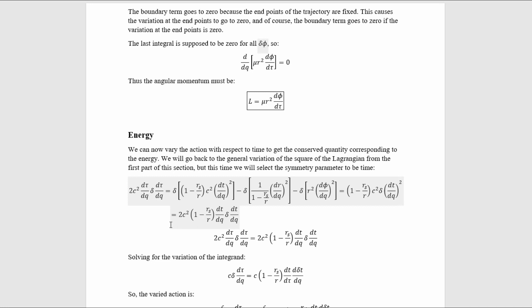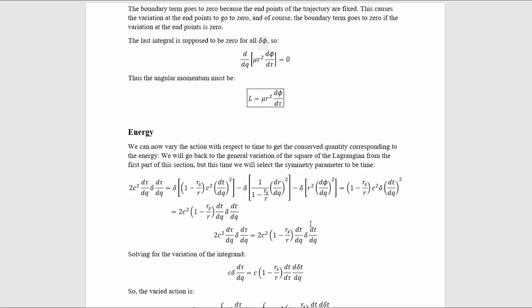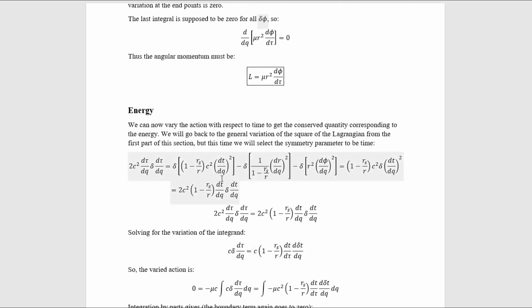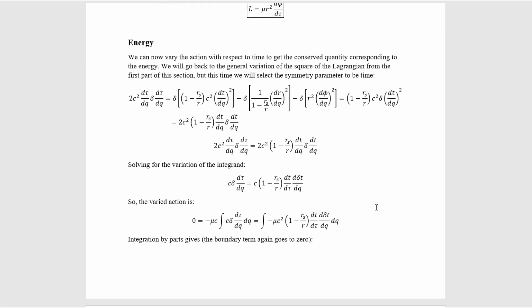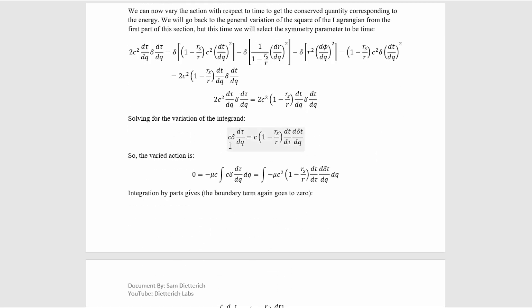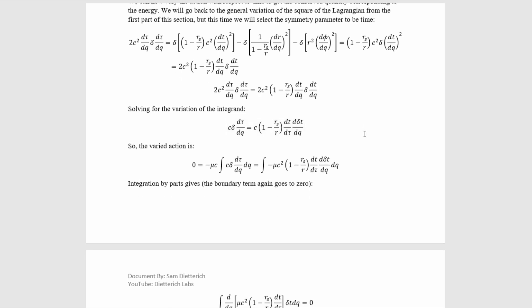So now let's switch it up and choose the symmetry parameter to be the time instead of the azimuthal angle, so that we get the energy formula instead of the angular momentum formula. The only term that's dependent on the time is this one here, so that's the only term that survives, and again we can use the power rule to get this. We ultimately arrive at this equality with that, and then we can solve for the variation of the integrand of the action, which is just this.